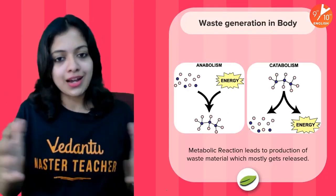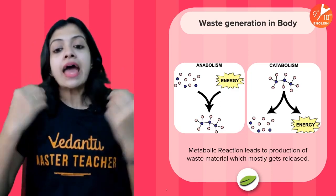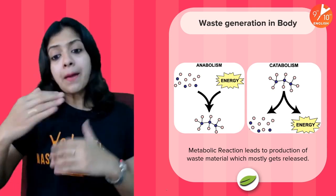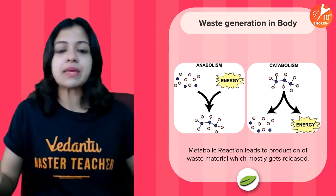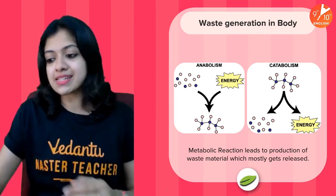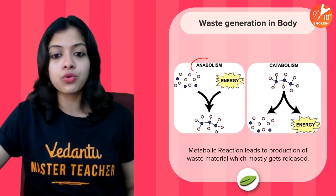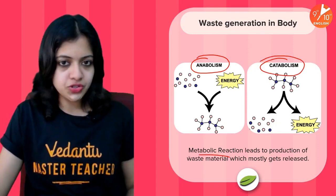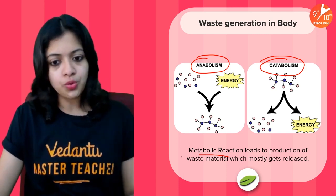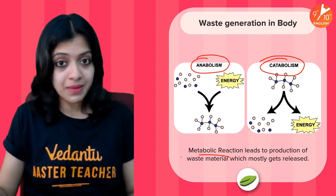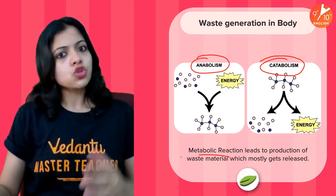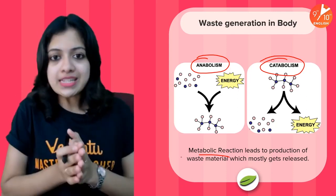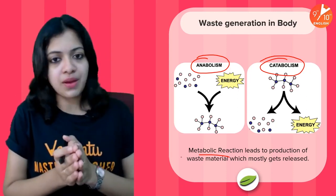Let's get started with the process of excretion. As far as living organisms are concerned, metabolism keeps happening continuously — build up of some substances or breakdown of substances. Build up is what we call anabolism and breakdown is catabolism, but in general we call them metabolic reactions. Metabolic reactions generally lead to the production of byproducts or waste materials, and most living organisms have their own methods by which these waste materials can be released from the body.